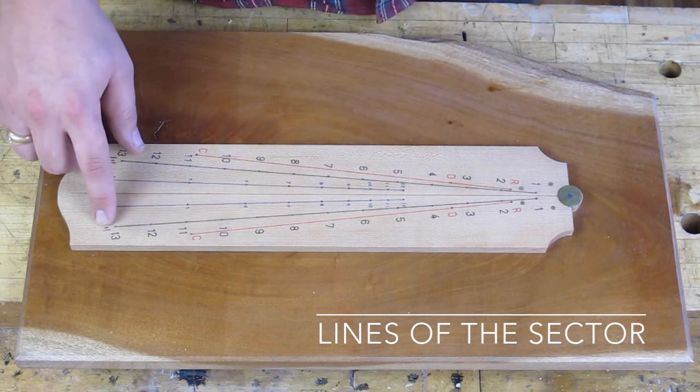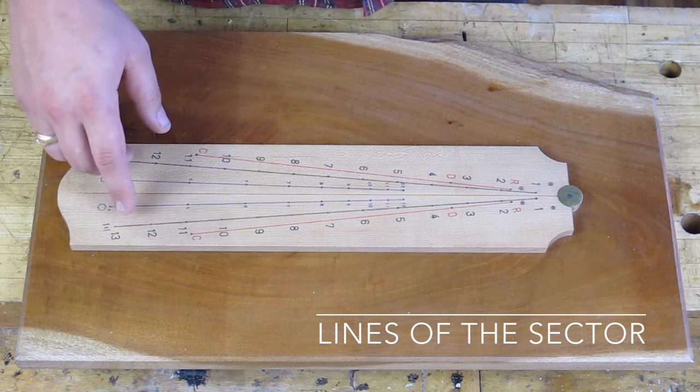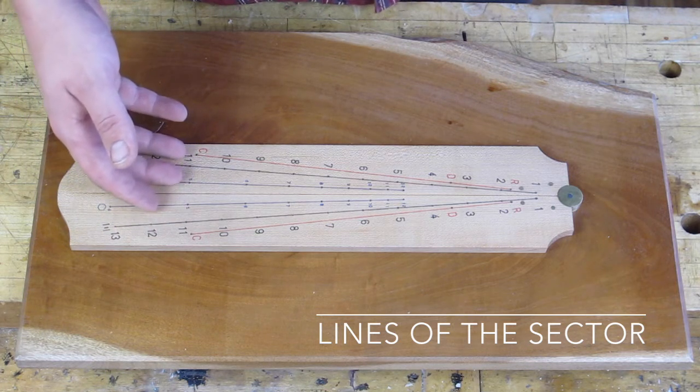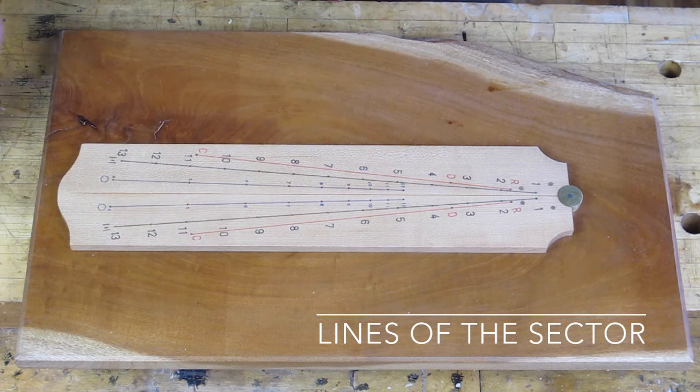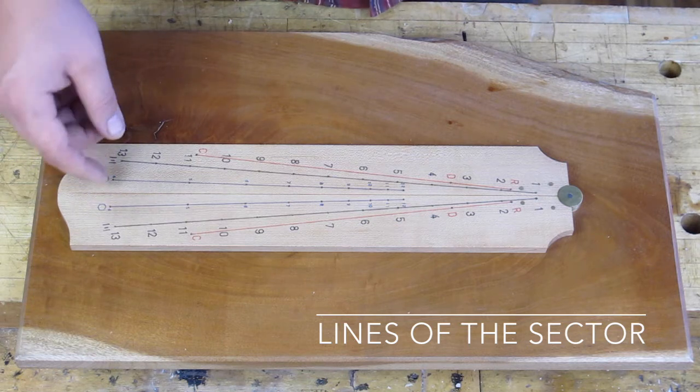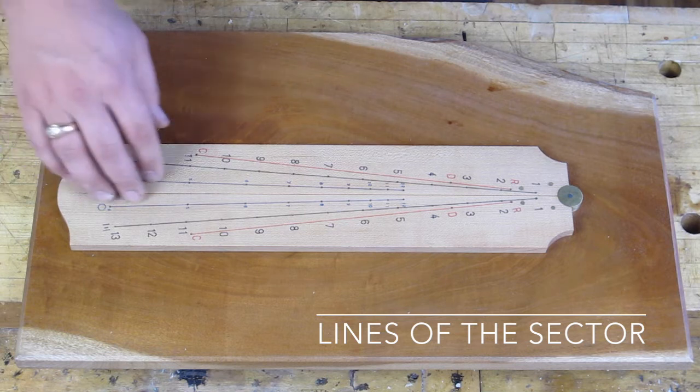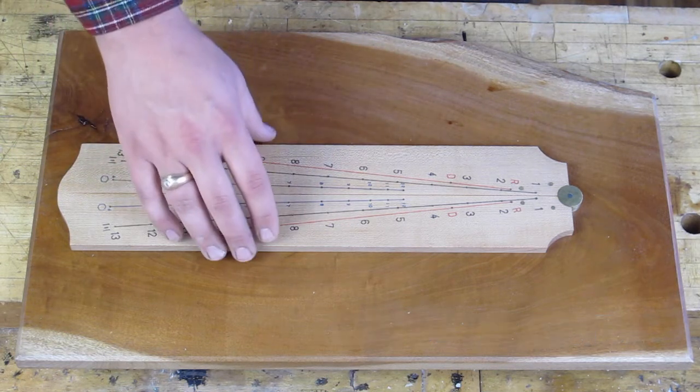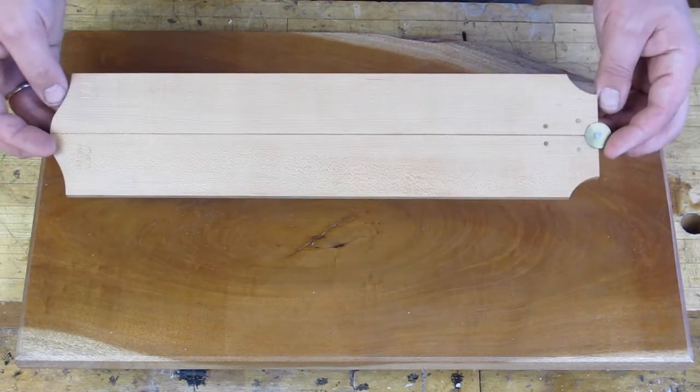There's a line of lines, which is this black line, and we're going to use that to multiply and divide and read proportional ratios off of a physical measurement taken with a divider. And then we've got a blue line here, which is the line of polygons, and we're going to use that to draw regularly sided polygons given the radius of the circle.